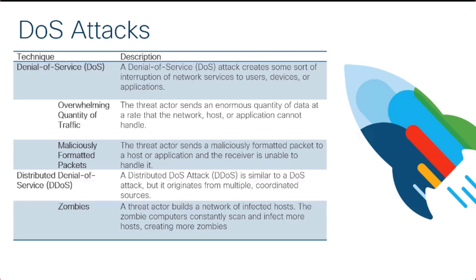There are two ways this usually goes about. With an overwhelming amount of traffic, an enormous amount of data at a high speed rate is hitting a target — whether that target is a user, a server, or even a network intermediate device. That target is unable to handle that amount of data, so it cannot respond to legitimate requests from legitimate users.